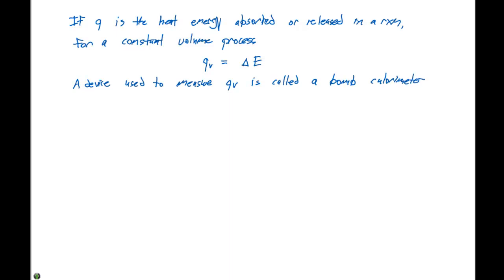We can also look at a process that happens under constant pressure. So for a constant pressure process, and I'll note that most chemical reactions happen under constant pressure conditions, our q at constant pressure is going to be equal to delta H, and delta H we're going to define as the change in enthalpy.